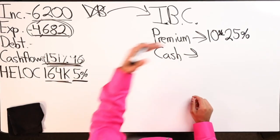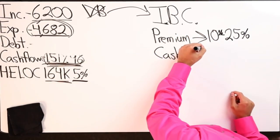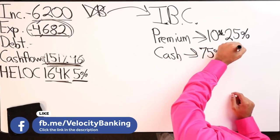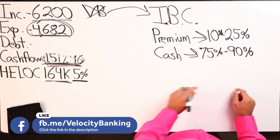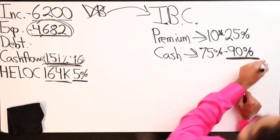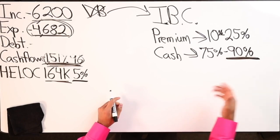In a nutshell, any policy you look at, you want anywhere from 10 to 25 percent going towards premium of however much money you put in, and then you want anywhere from 75 to 90 percent going towards cash. Most of my clients I work with, I stick with the 90 because it just makes sense based on how I like to structure the accounts.